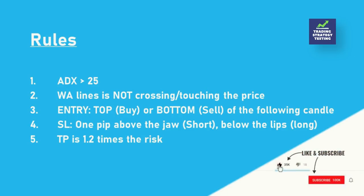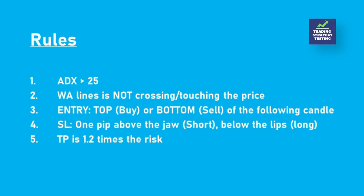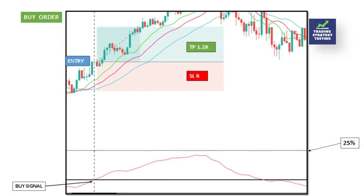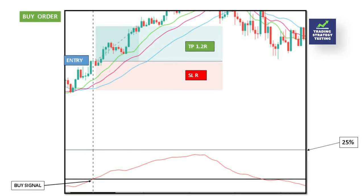The rules are simple: when the ADX crosses above the 25 mark, we will go long if the price is above the lips, and short if the price is below the jaw. We need to be sure that there is a relatively sufficient distance between the price and the closest Williams Alligator line, signifying that the trend is strong enough. The risk-to-reward ratio is 1 to 1.2.